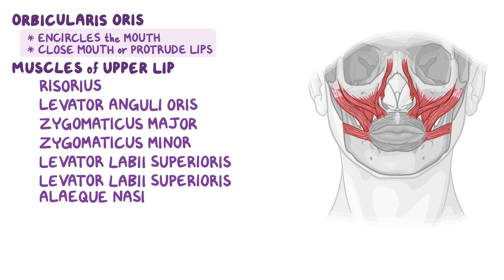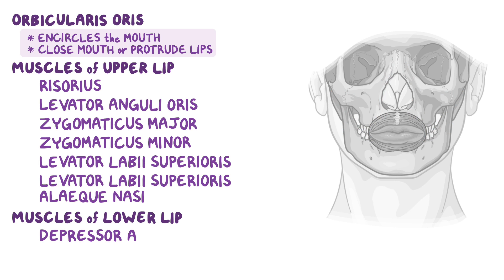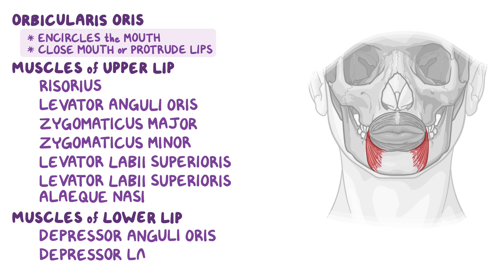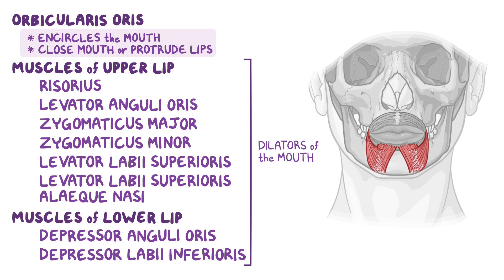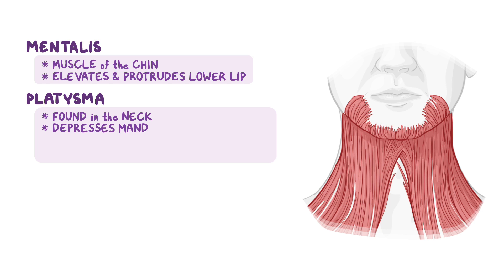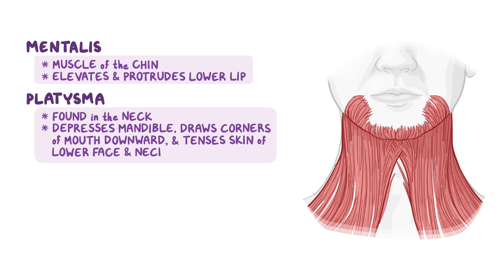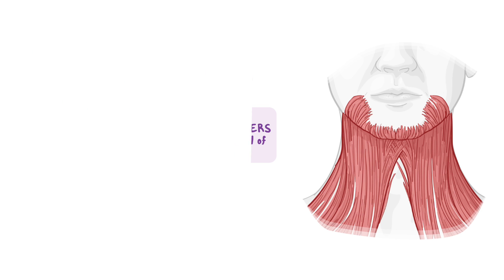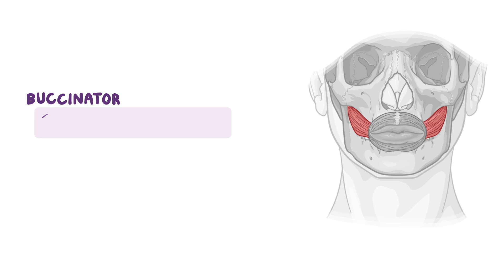All upper lip muscles are involved in various lip movements. Muscles of the lower lip are the depressor anguli oris and the depressor labii inferioris. Both the muscles of the upper and lower lip are dilators of the mouth. The mentalis is a muscle of the chin and elevates and protrudes the lower lip. The platysma is found in the neck and depresses the mandible, draws the corner of the mouth downwards, and tenses the skin of the lower face and neck. Finally, the buccinator is a rectangular muscle found deep in the cheek and presses the cheeks against the teeth.